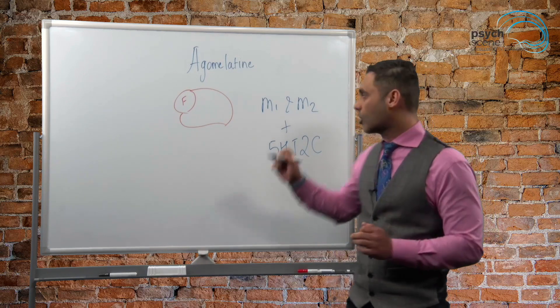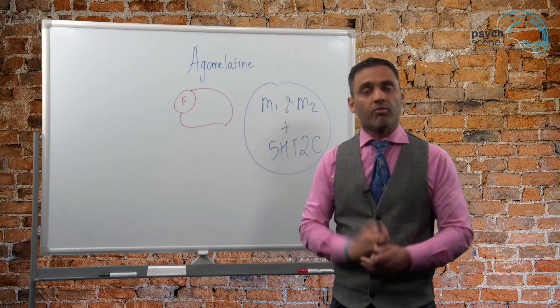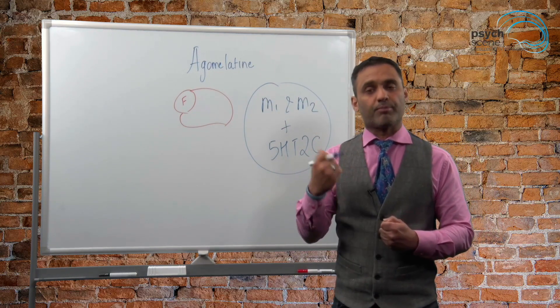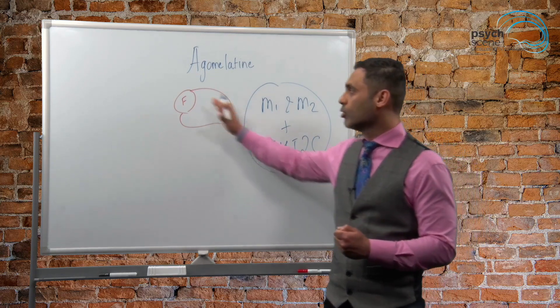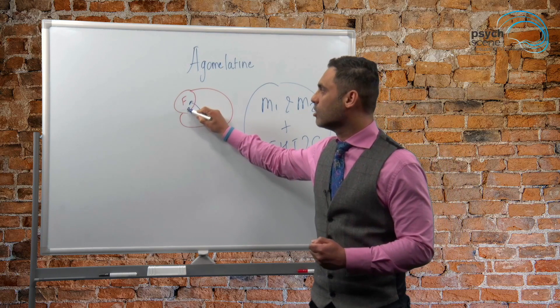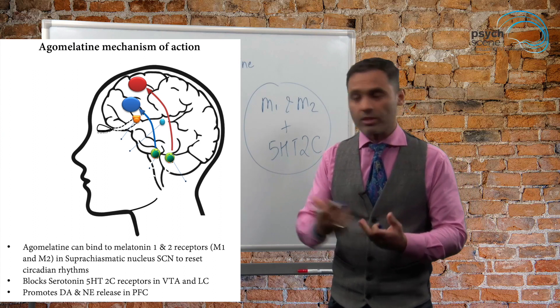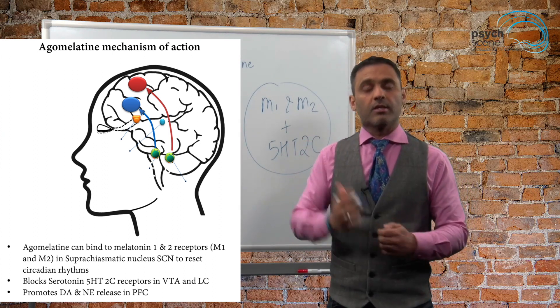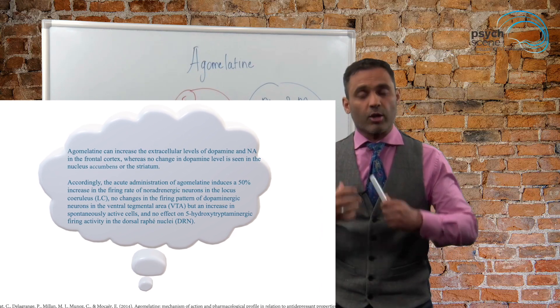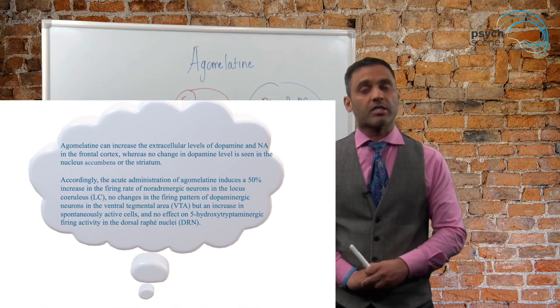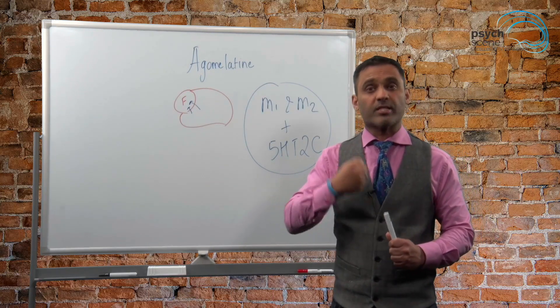Now interestingly the combination of these two actions results in an antidepressant property that is beneficial, which is it actually increases dopamine and noradrenaline. In other words, dopamine and noradrenaline levels in the frontal lobe are increased, and we know that dopamine and noradrenaline are really important in a number of frontal lobe functions such as improving hedonic drive, which is the ability to experience pleasure,